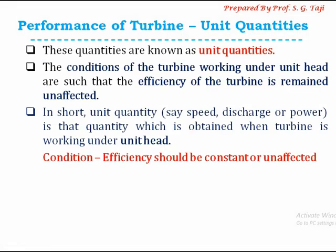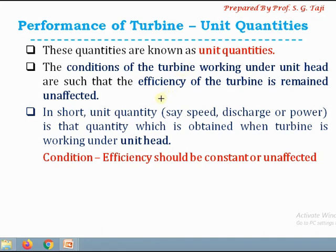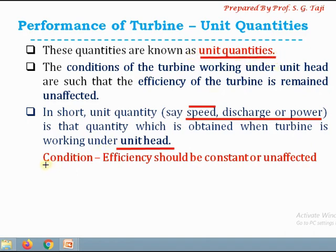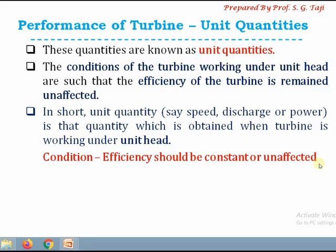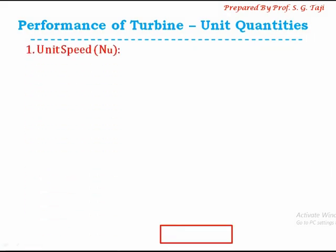So let's go to the definition of unit quantities. In short, unit quantity is that quantity which is obtained when the turbine is working under unit head. Whenever we reduce the head on the turbine to unity, the value of that quantity is known as unit quantity. Generally we consider three unit quantities: unit speed, unit discharge, and unit power. The condition is that efficiency is maintained as constant and unaffected.